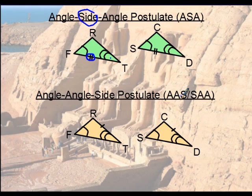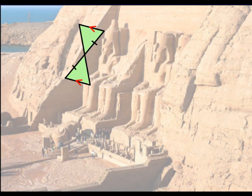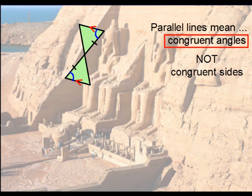If one triangle is angle-angle-side, the other can be SAA and that's fine, or they can both be AAS. Let me give an example. For this particular one, we have parallel sides. Drawing a Z shape identifies where the equal angles are. Remember that parallel lines mean congruent angles, not congruent sides.